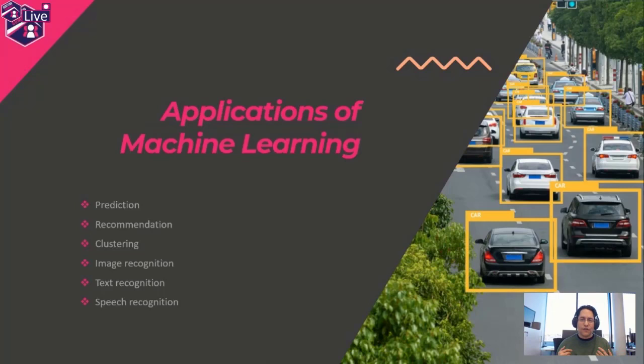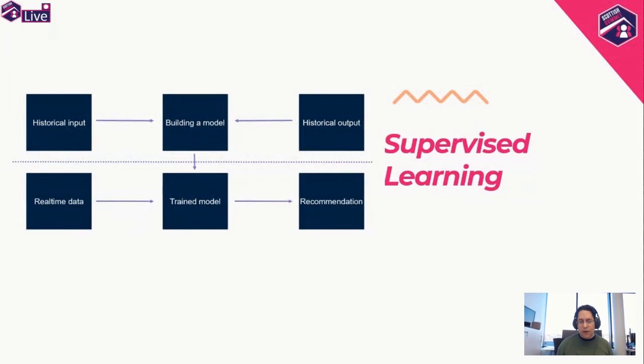Some applications of machine learning: for example, you can do prediction — a classical example is predicting the price of a house based on information like location, number of rooms, and square meters. Or you can think about recommendation systems, where purchases on the web generate recommendations based on your historical purchases and people with similar purchase patterns. We also have clustering — segmenting customers into different groups for targeted information — as well as image recognition, text recognition, and speech recognition.